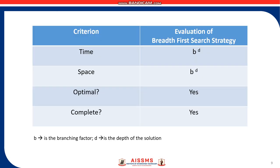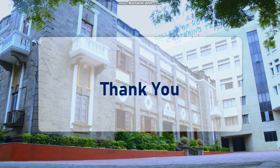We see that BFS proceeds with each shallowest node, that is level-wise. BFS technique definitely reaches the goal state and hence is complete. If the cost of each path is 1, then BFS leads to finding the solution with cheapest cost and shortest path, so it is optimal. The time and space complexity is given as order of B raised to D, where B is the branching factor and D is the depth of the solution. That's all for now — stay tuned for many such videos on important topics of Artificial Intelligence. Thank you for watching.